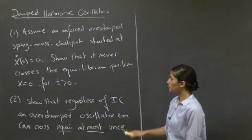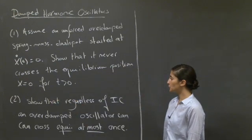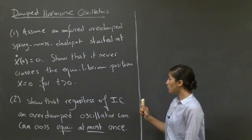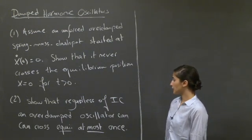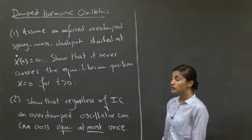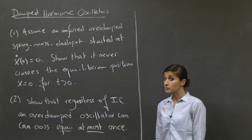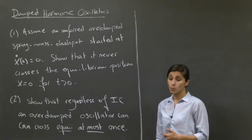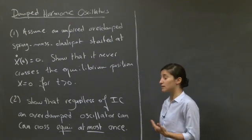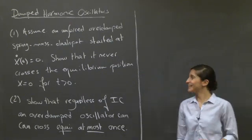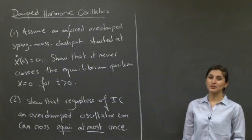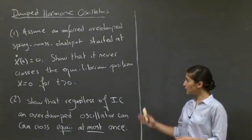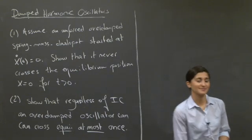The second part of the problem asks you to show that regardless of the initial condition, this overdamped oscillator cannot cross the equilibrium position more than once. Why don't you pause the video, try to think about this problem, and I'll be right back.